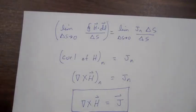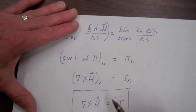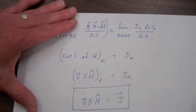We still need to know how to actually perform this operation. For instance, if we're given some H, how do we actually take the curl of H to get the current density? That's what we will cover in part two.